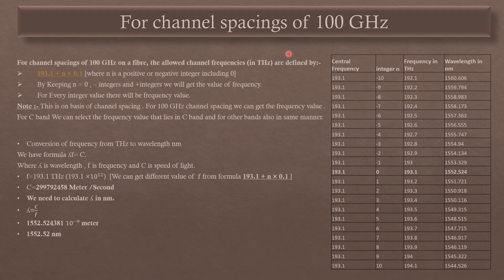For a channel spacing of 100 GHz, the same process applies but the formula is 193.1 plus N times 0.1. With N equal to 0, we get 193.1 THz; with N equal to 1, we get 193.2 THz; with N equal to minus 1, we get 193.0 THz. Corresponding wavelength values are obtained using lambda equals C divided by F.